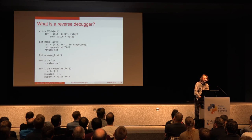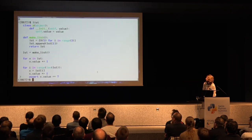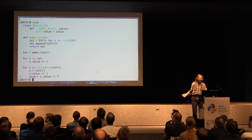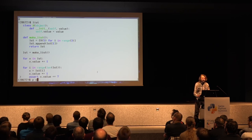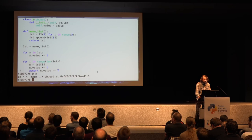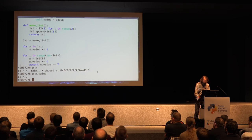If you have a reverse debugger, here is the reverse debugger. I'm at the end of the program. It's an interface that looks a lot like PDB, in case you know it. I can print the value of X — it's some object — but what is X.value? 7.